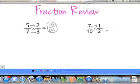Again, I hope you multiplied straight across. So 7 times 1 is 7. 10 times 2 is 20. Check to make sure you can't simplify. And our final answer is 7/20.